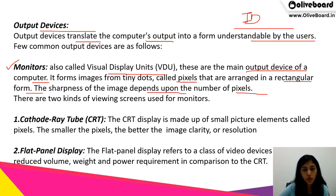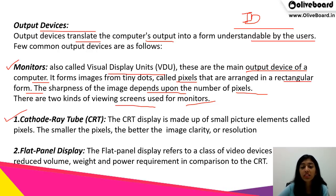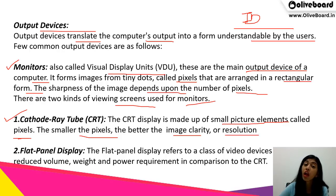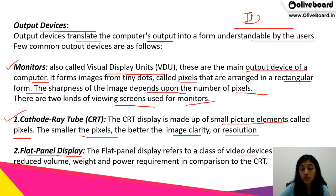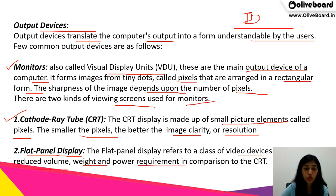There are two types of viewing screens used for monitors. The first is the cathode ray tube (CRT), where the display is made up of small picture elements called pixels — the smaller the pixels, the better the image clarity or resolution. The second is flat panel display, which has reduced volume, weight, and power requirement compared to CRT, making it better in many ways.